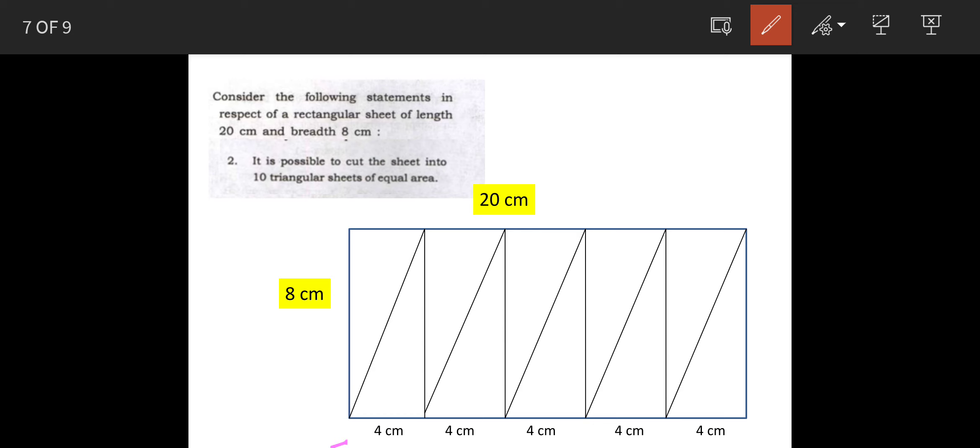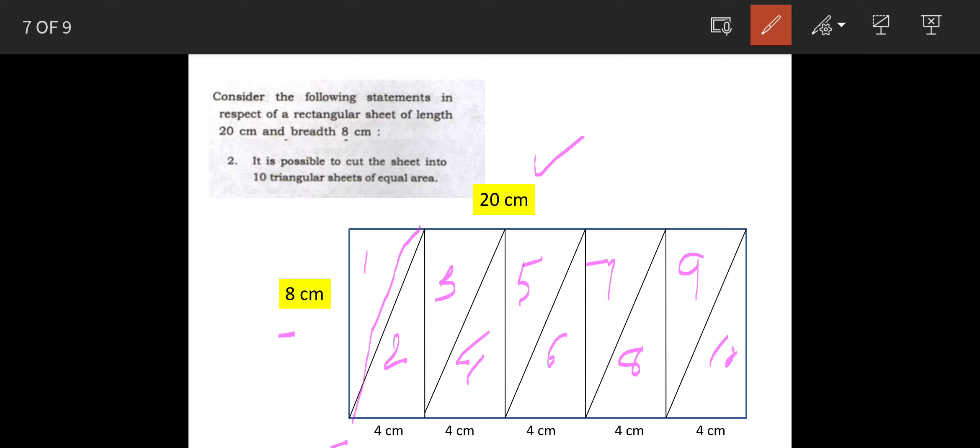So, first rectangle 4 cm by 8 cm and we have drawn a diagonal like this. So, in this manner, you are getting actually 10 triangles: 1, 2, 3, 4, 5, 6, 7, 8, 9 and 10. So, that means the second statement is also correct.